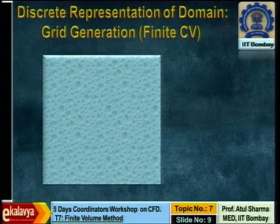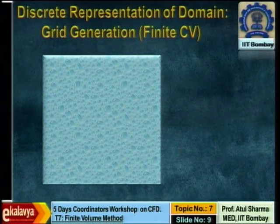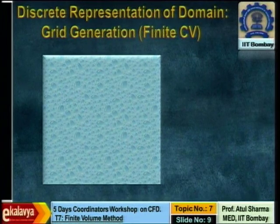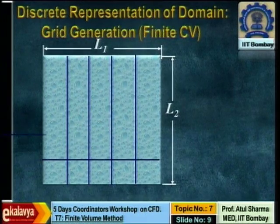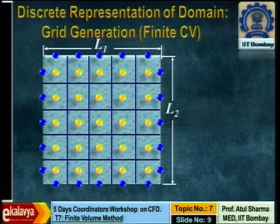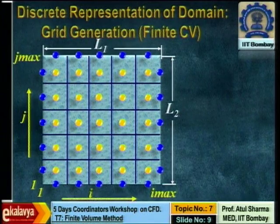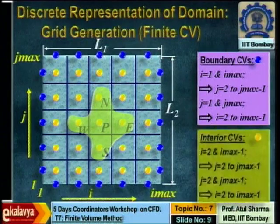The finite volume method is basically discretization of the unsteady term, advection term, and diffusion term. I will do this quickly as it is repetition. These are your grid points — yellow circles are interior grid points and blue circles are boundary points. The discretization of the continuity equation is something slightly different; I am showing it for the first time, so I will discuss it in a little detail.